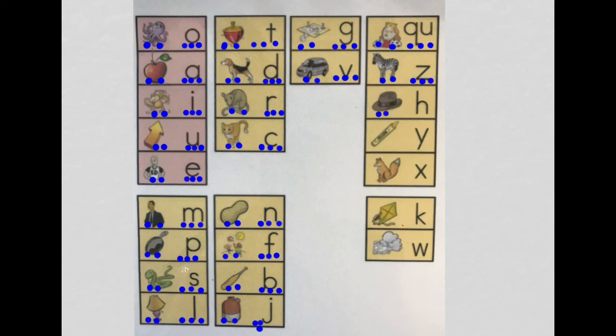Hat. Hat. H, h, h. Yellow. Yellow. Y, y, y. Fox. Fox. X, x, x. Kite, kite. K, k, k.